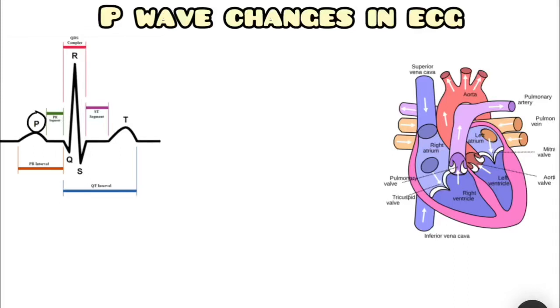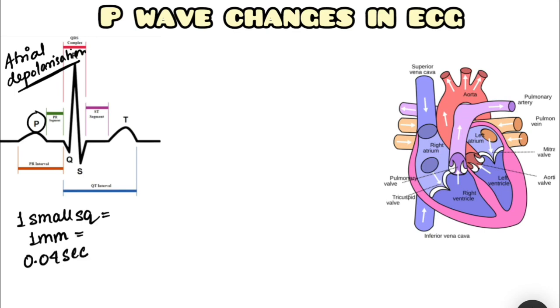The very first waveform in an ECG is the P wave, which represents atrial depolarization. The key principle to remember is that one small square equals one millimeter, which equals 0.04 seconds.